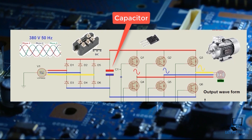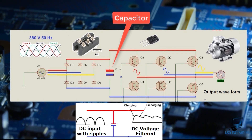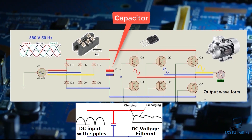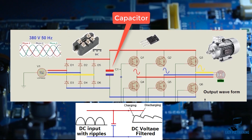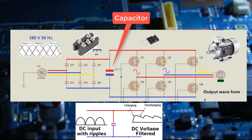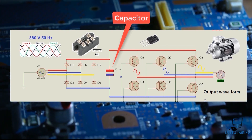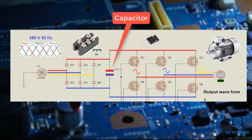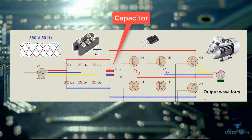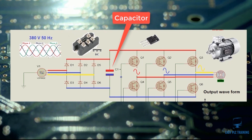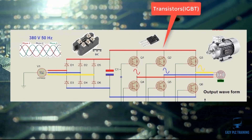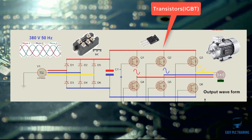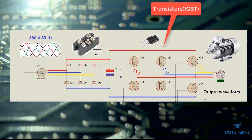Because the DC signal from the diodes is not very clean, we need a capacitor. The purpose of the capacitor here is to clean the DC. The output that comes from the capacitor will be very nice and clean.